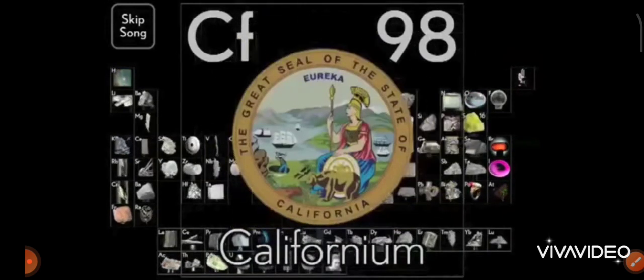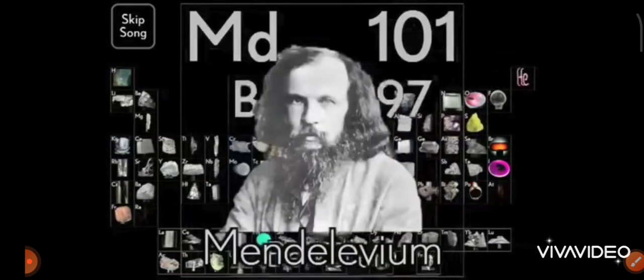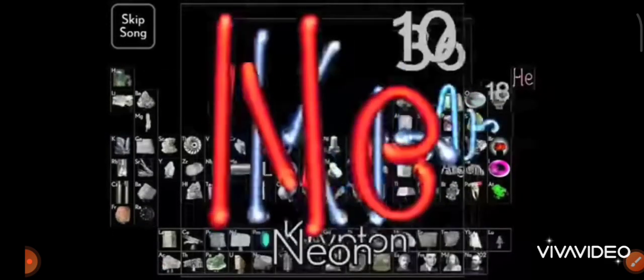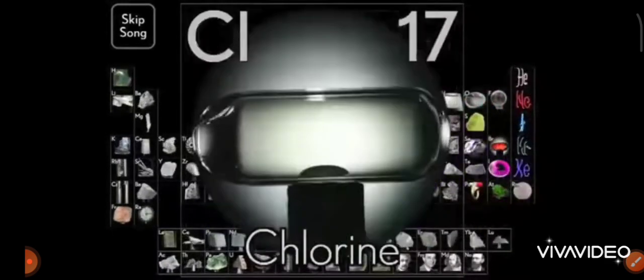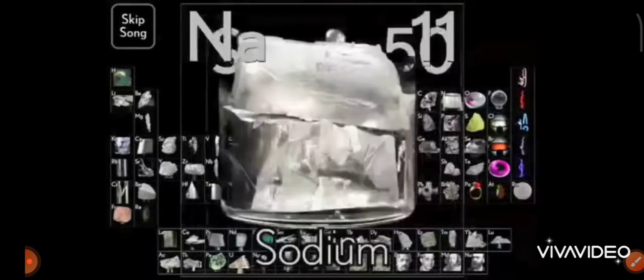There's sulfur, californium, and fermium, berkelium, and also mendelevium, einsteinium, nobelium, and argon, neptunium, and radon, and zinc, and rhodium, and chlorine, carbon, cobalt, copper, tungsten, tin, and sodium.